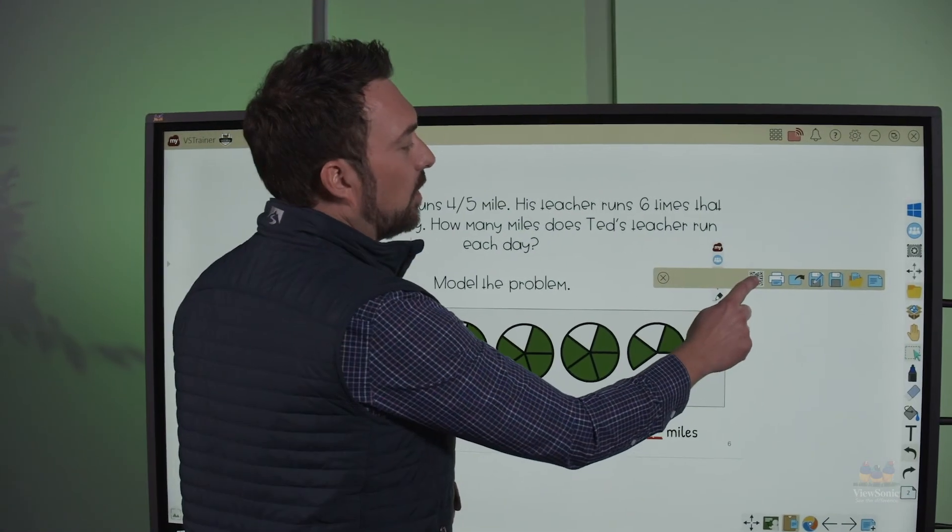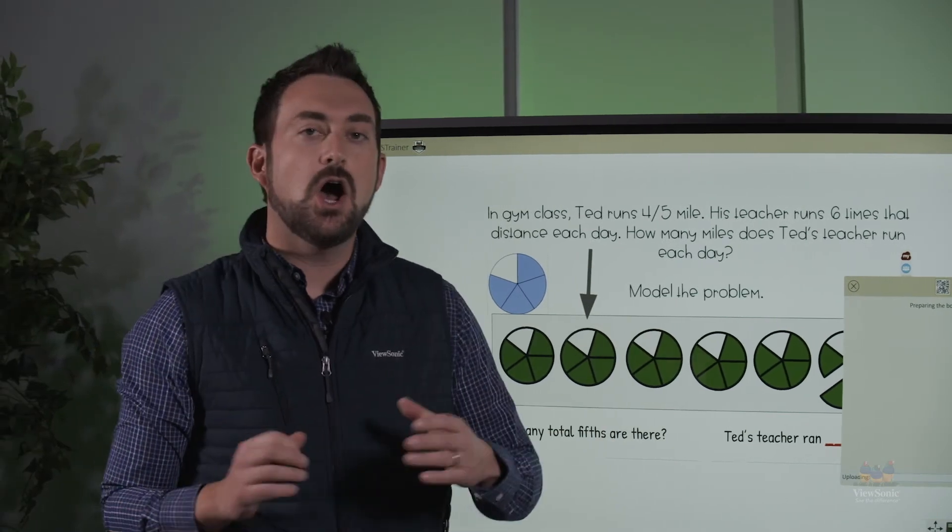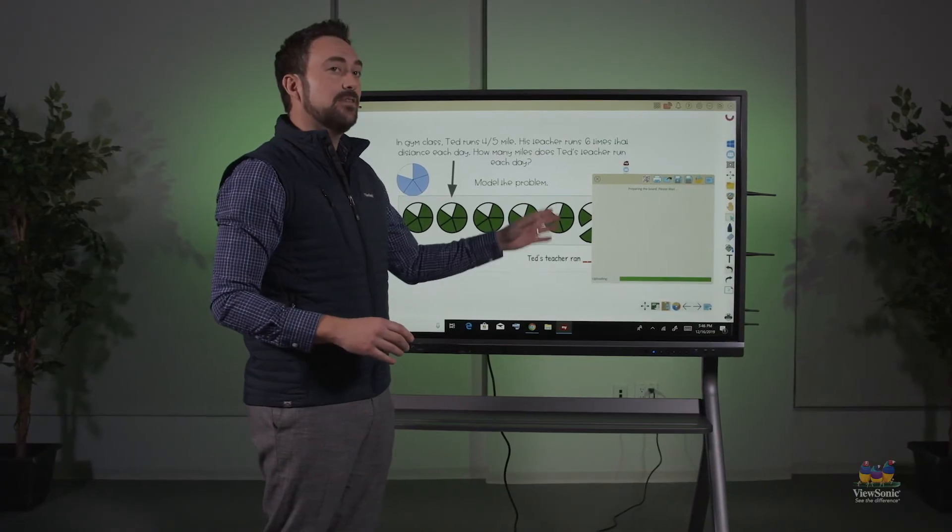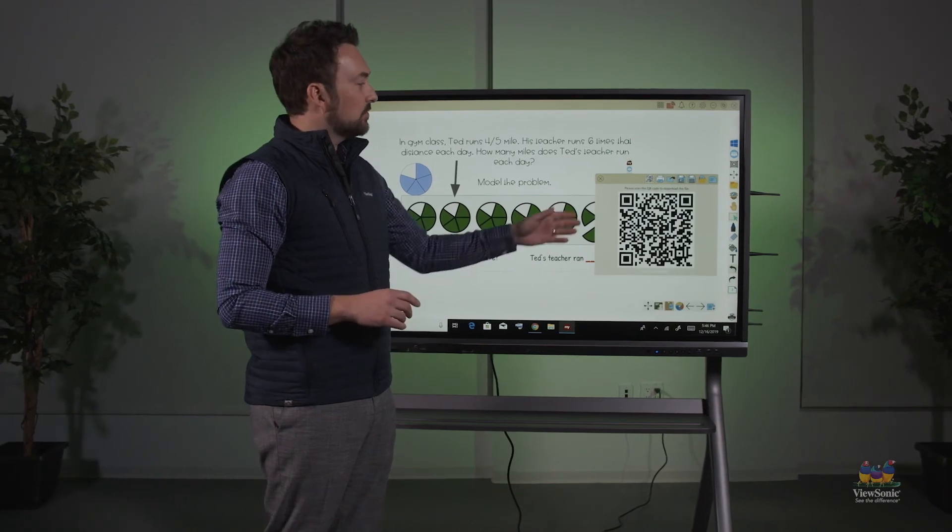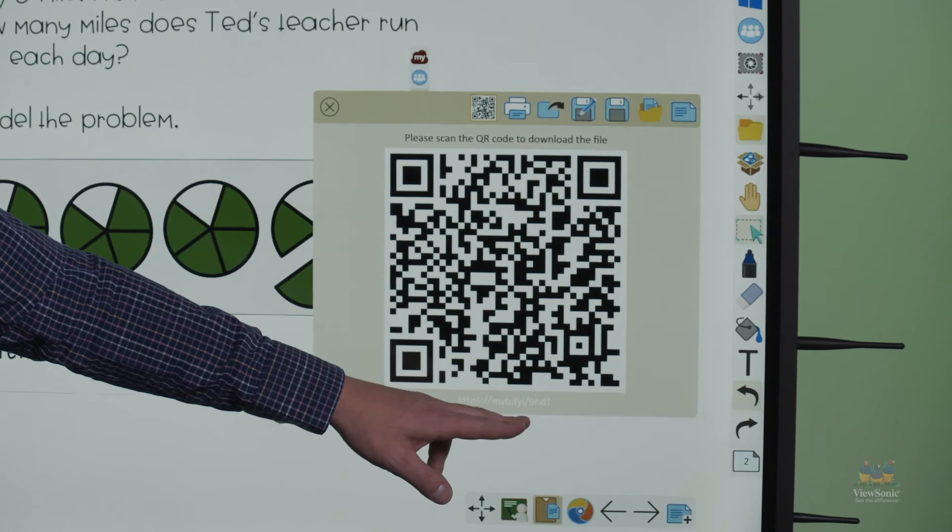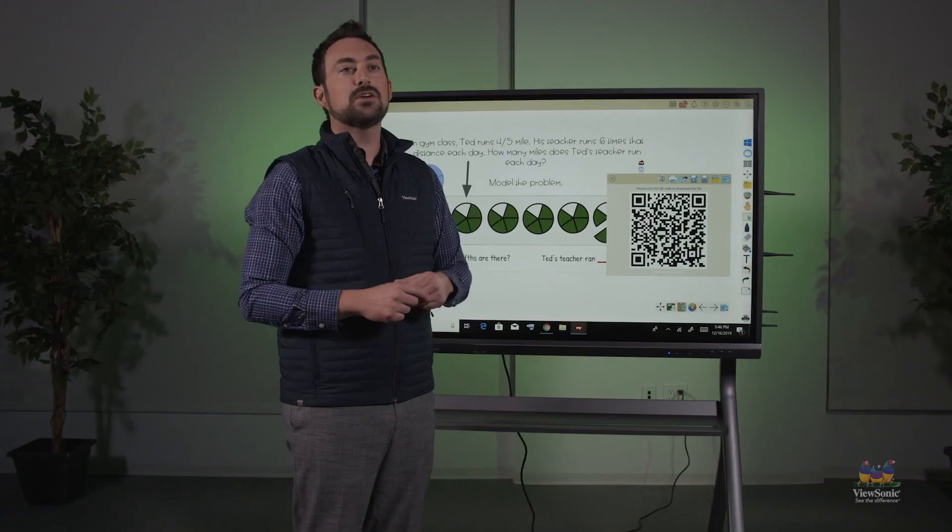If I touch the QR code, this is actually going to take my presentation, upload it to Google Drive as a PDF, and then create a share link. So there's a QR code, and it's a little difficult to see, but there's a shortened URL at the bottom.